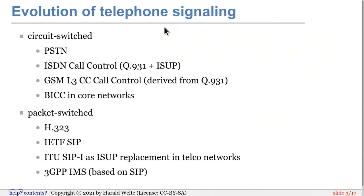There are of course the traditional circuit-switched technologies, such as the public-switched telephony network with analog lines, later extended by ISDN — specifically the Q931-based call control on the subscriber interface on the last mile — and in the core network the ISDN protocol, part of the SS7 stack for signaling circuit-switched voice calls. GSM inherited that and uses a layer-3 call control derived from Q931. In the core network it's mostly the so-called BICC, the bearer-independent call control protocol, spoken between core network elements, or also ISUP in traditional circuit-switched cellular networks.